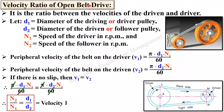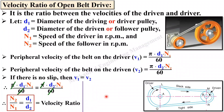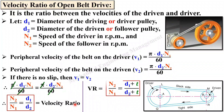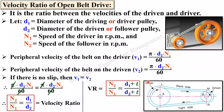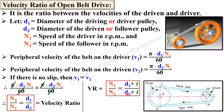This is the velocity ratio for the open belt drive — a very simple result. Further, this velocity ratio can be modified: N2 / N1 = D1 / D2, but here the thickness of the belt is also considered. If the thickness of the belt is comparatively high, you have to include it in the formula. When belt thickness is considered, the formula for velocity ratio is adjusted accordingly.